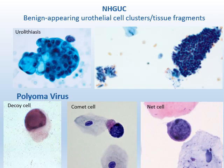Polyomavirus is widely present. The typical findings have been described as decoy cell, comet cell, or net cell, with large, homogeneous, opaque, or ground-glass intranuclear inclusion. However, in different stages of infection the cytopathological features may not be typical. When the viral particles leach out, chromatin may be coarse, mimicking high-grade urothelial cells, and an atypical diagnosis may be rendered.